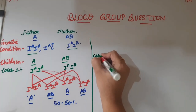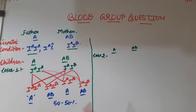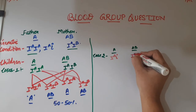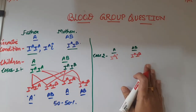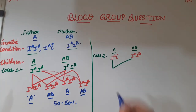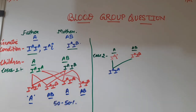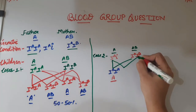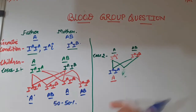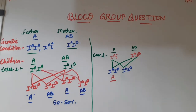Now let us solve Case 2, where father belongs to blood group A and mother belongs to blood group AB. Here, the father has the heterozygous condition — Iᴬ and small i — and mother has IᴬIᴮ. If the father's Iᴬ fuses with the mother's Iᴬ, the combination is IᴬIᴬ, expressing blood group A. If the father's Iᴬ fuses with the mother's Iᴮ, the combination is IᴬIᴮ, expressing blood group AB.